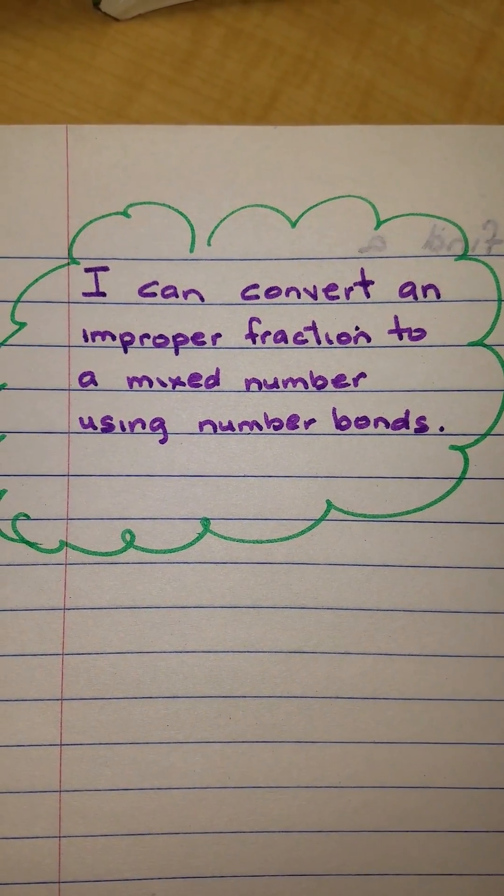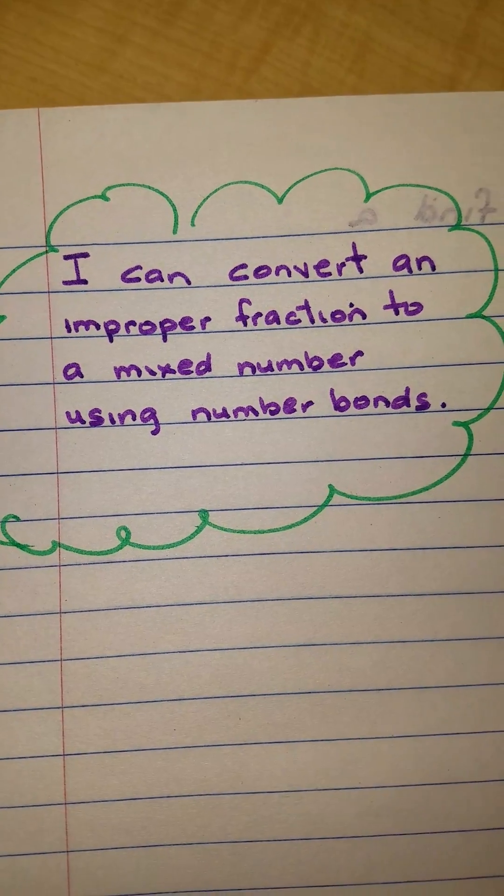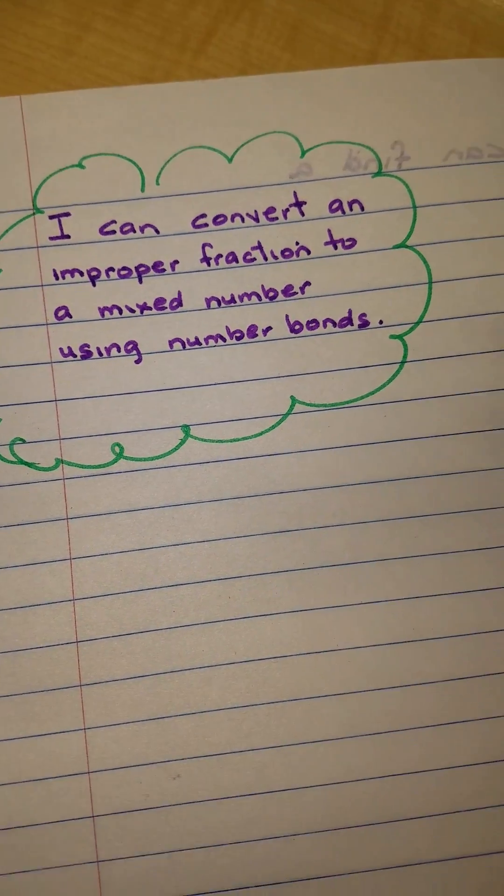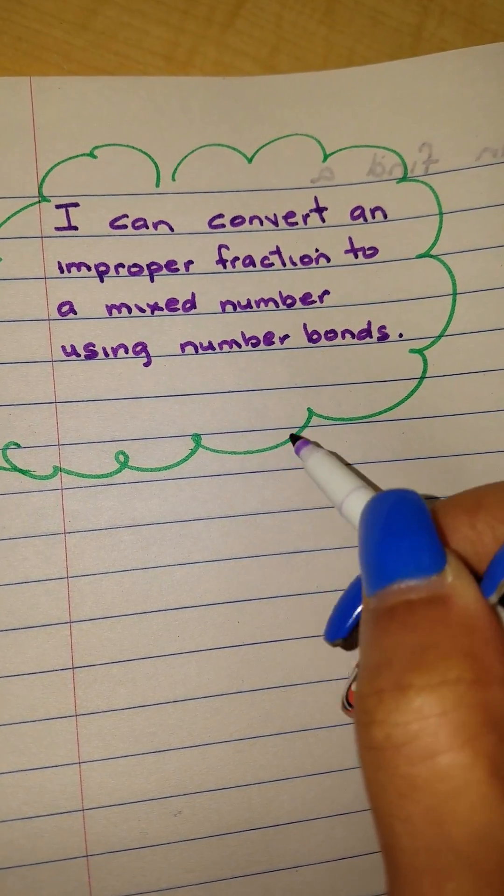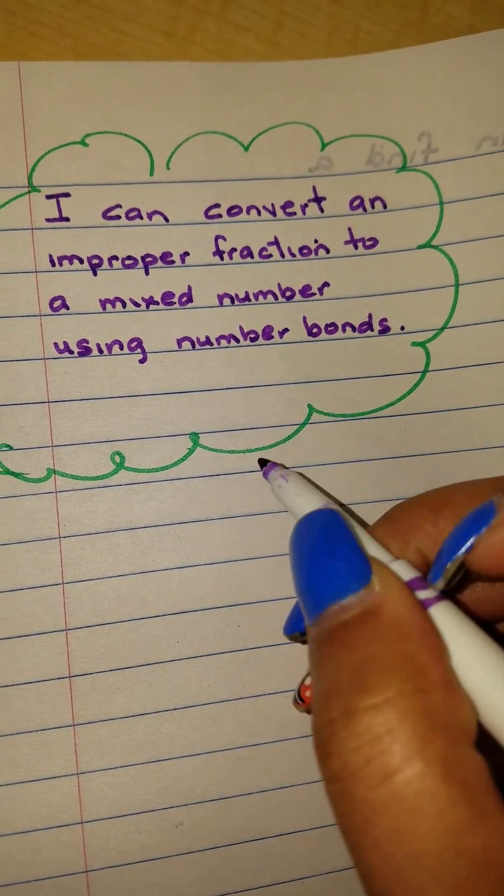So today we're going to work on the objective: I can convert an improper fraction to a mixed number using number bonds. Now number bonds is where we create groups of numbers that will equal the value that is in our top number.